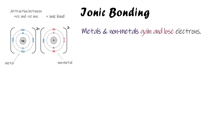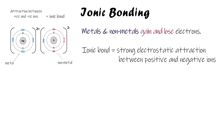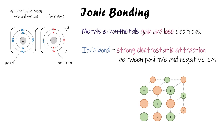That attraction is our ionic bond. The definition of an ionic bond is a strong electrostatic attraction — a really important key phrase — which means attraction between positive and negative charges. In this case it's between positive ions and negative ions arranged in a big crystal structure.